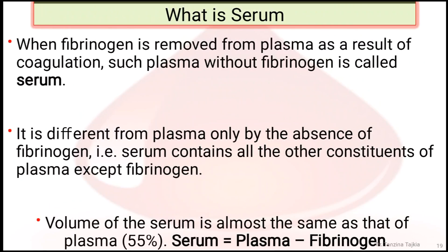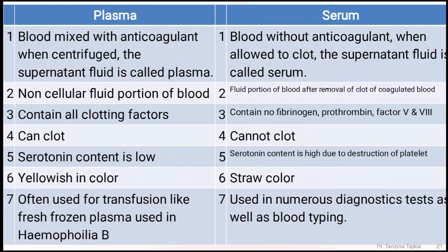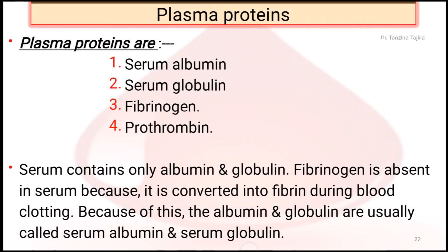Serum is what results when fibrinogen is removed from plasma as a result of coagulation. Serum equals plasma minus fibrinogen. When blood is collected in a container, it clots — fibrinogen is converted into fibrin, and blood cells are trapped into the fibrin, forming a blood clot. After about 45 minutes, serum oozes out of the blood clot, which is clear straw-colored. For clinical investigation, serum is separated from blood cells and clotting elements by centrifuging.